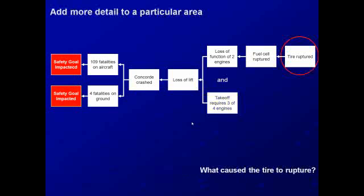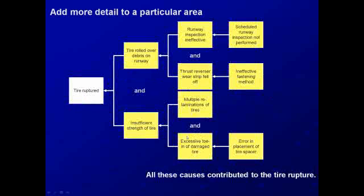We can also add more detail to a particular area. We don't have any information about what caused the tire to rupture, so we can go into more detail on this portion of the cause map. The tire ruptured because it rolled over debris on the runway. There was debris on the runway because the thrust reverser wear strip from a previous aircraft fell off because it was not fastened effectively. Additionally, the runway inspection was ineffective because it was not performed. In addition to the tire rolling over debris, we have concerns about the strength of the tire — had the tire been stronger, it may not have ruptured. Some contributors to the strength of the tire are multiple relaminations of the tires and excessive toe-in of the damaged tire, which was caused by an error in placement of the tire spacer. All of these causes contributed to the tire rupture.